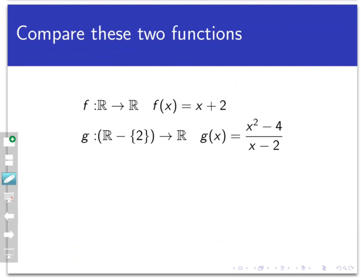Now let's take a look at a couple of examples, each of which consists of two similar but possibly different functions. Here's the first pair. F is a function that goes from the real numbers to the real numbers — so notice I've already specified the domain, which is the real numbers, and the co-domain is also the real numbers. The process of change is when I'm given a point in the domain, I simply add two to it, and that's my output. This is a very easy function to understand.